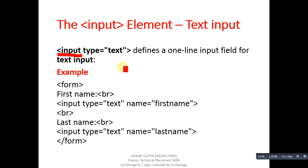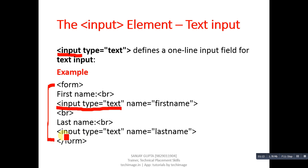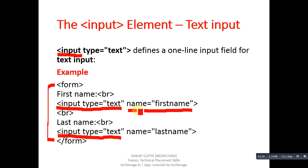In this tutorial I am going to discuss about the input element. You can see this example — here the form tag is opened and closed. Inside the form tag I have used input type text twice, so it will create two input boxes where I can type first name and last name. The identification of these input boxes is given with the help of the name attribute, so the first box name is 'first name' and the second text box name is 'last name'.